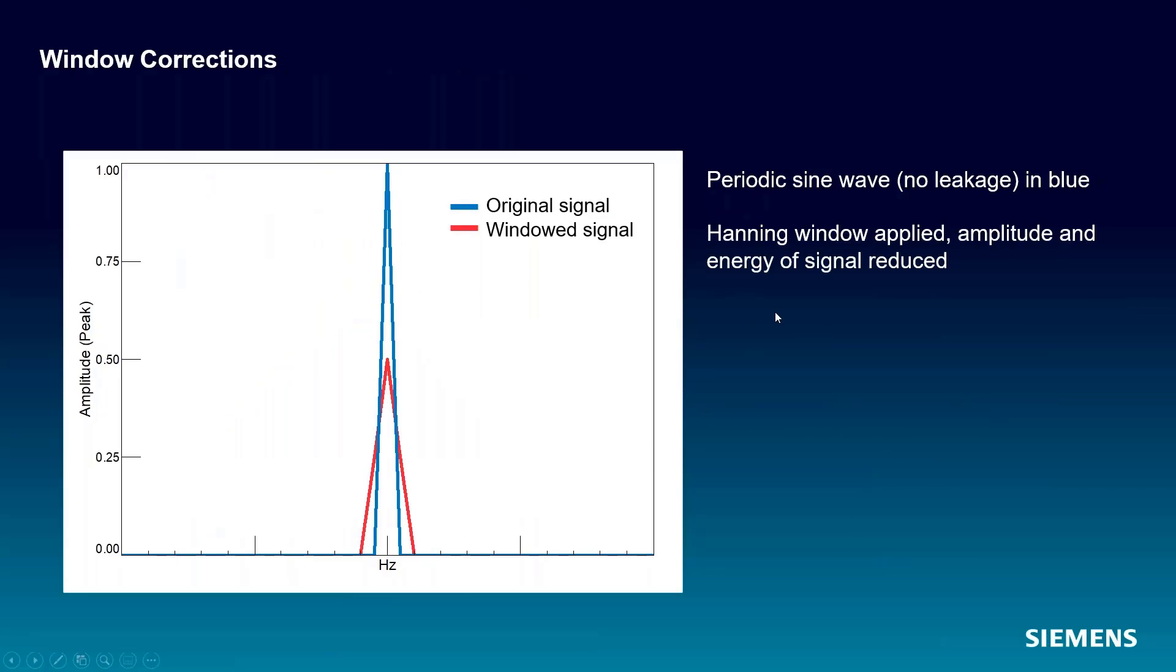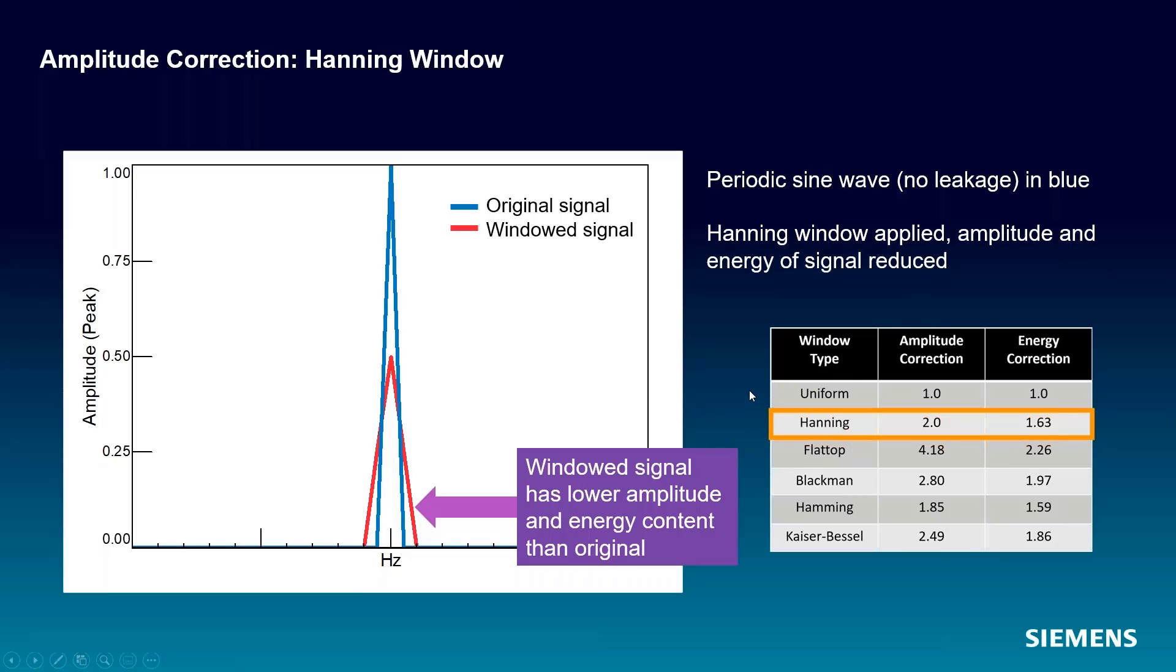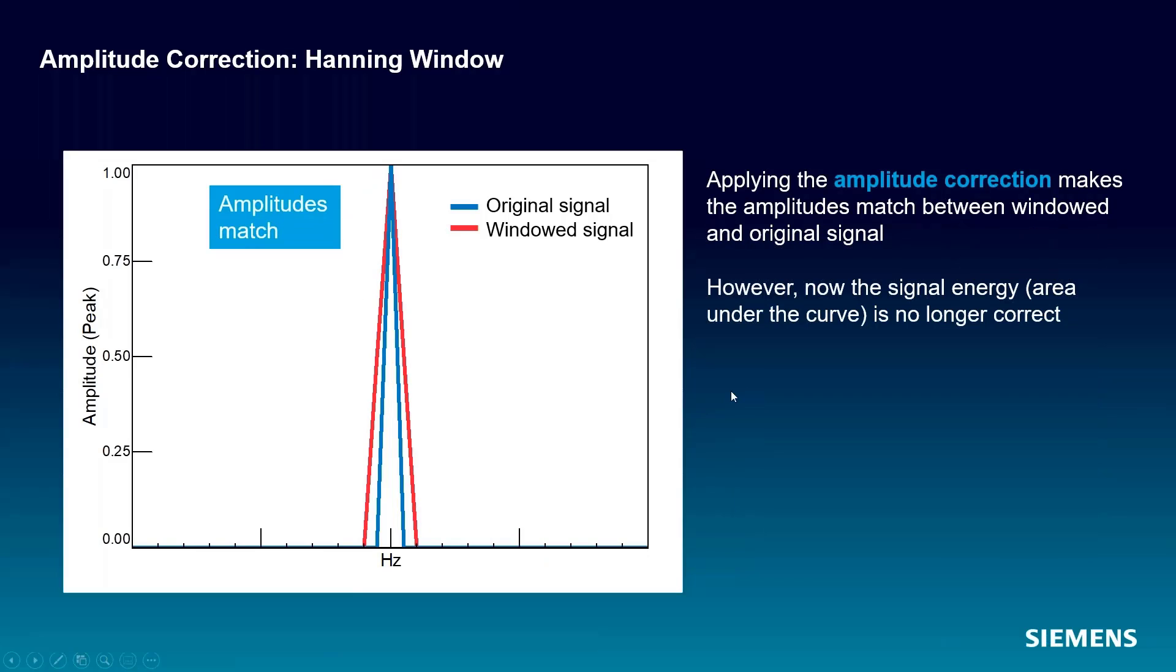Here we have these signals: a uniform window, a Hanning window, and it looks like lower amplitude and less energy content than the original signal. So we have these amplitude and energy correction factors that we apply, and when we apply these, we can get this amplitude matching.